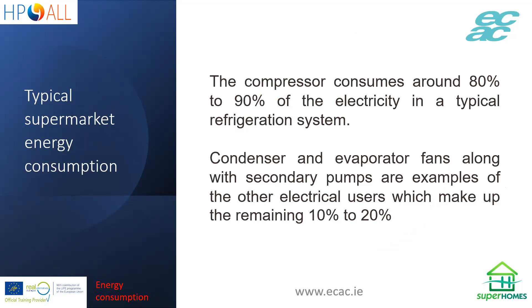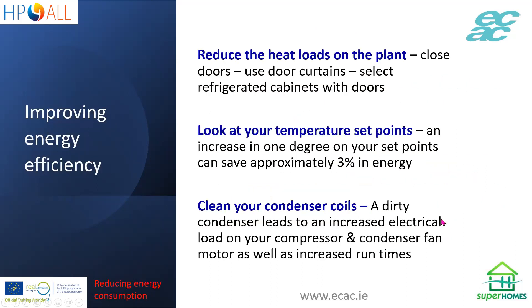The compressor consumes about 80 to 90% of the electricity in a typical system. The condenser and evaporator fans, along with any pumps and the control system, make up the remaining 10 to 20%. To improve energy efficiency, the obvious step is to reduce the heat load on the plant — that means closing doors and using door curtains on refrigerated cabinets. Look at your set points: if you can increase the set point by one degree, you can save approximately 3% energy. If you don't have to go down to two degrees and could survive at four degrees, there's a potential 6% energy saving.